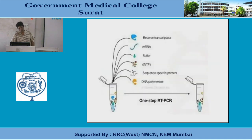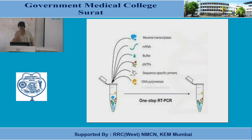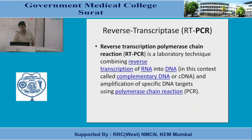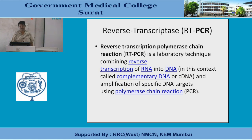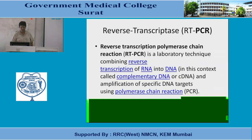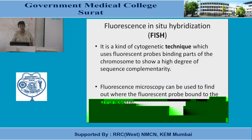The next type is reverse transcriptase PCR. According to the name, here we use the enzyme reverse transcriptase. It involves reverse transcription of RNA into DNA — just like cDNA — and amplification of a specific DNA target using the polymerase chain reaction. So from RNA you can make DNA using the reverse transcriptase enzyme.